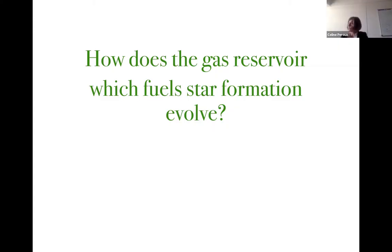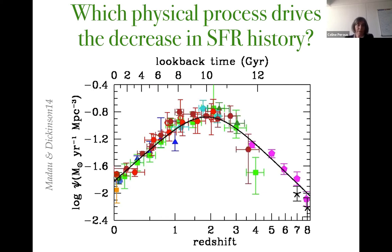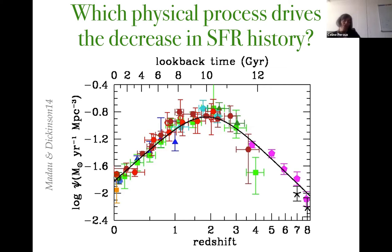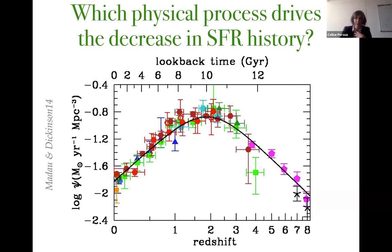I want to pose a few questions, starting with how the gas reservoir that fuels star formation evolves. This relates to the well-known Madau-Dickinson 2014 plot showing the star formation rate per unit cosmological volume, which increases from high redshift to redshift ~2 — the epoch of galaxy assembly — stays high to redshift ~1, and then dramatically decreases by several orders of magnitude to today. The question I want to pose is: what are the physical processes that drive this decrease?